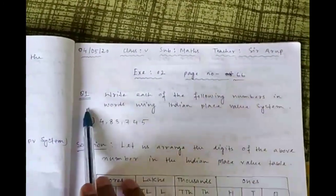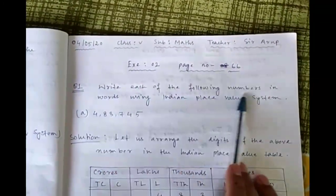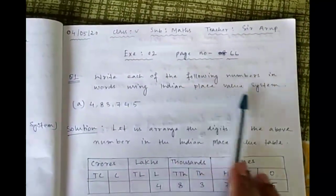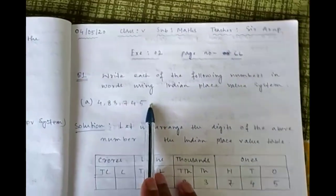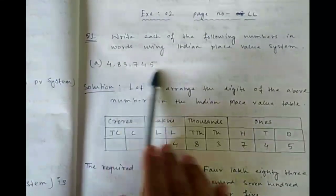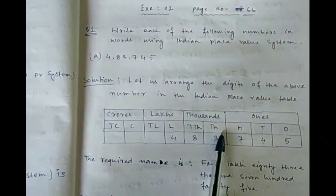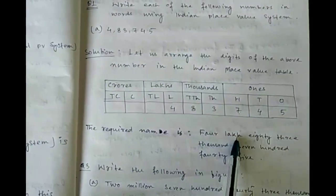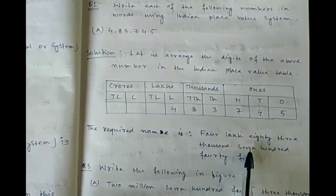Now Exercise 2 from page number 66. Question 1: write each of the following numbers in words using the Indian Place Value System. We have to convert the number into words. First we draw the Indian Place Value System table, put the number into it, and then we get the required name — that is 4,83,745.